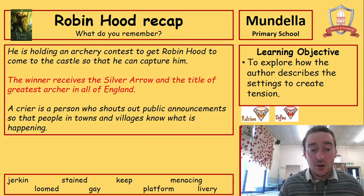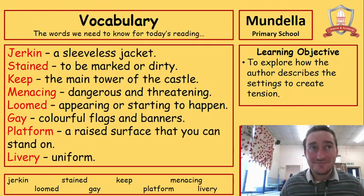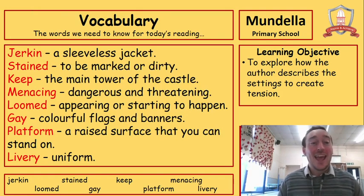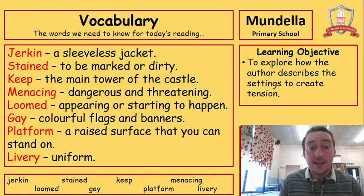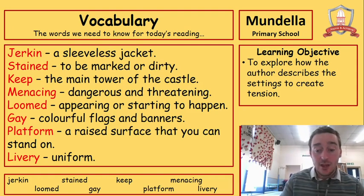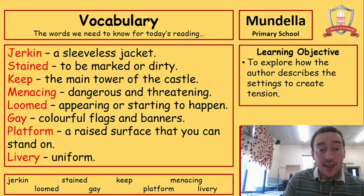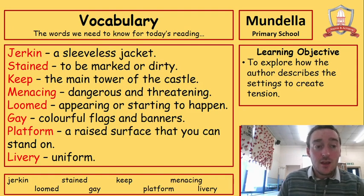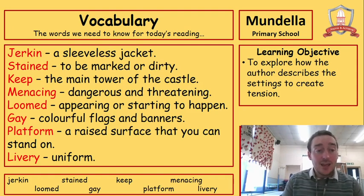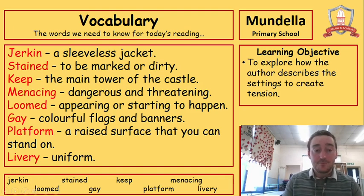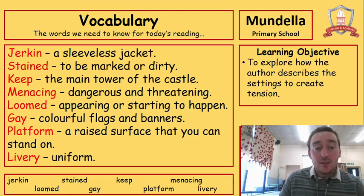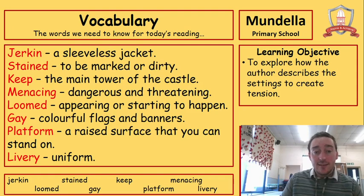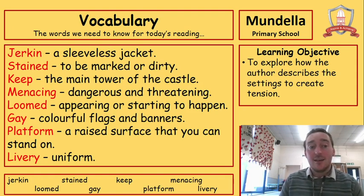Now let's have a look at the vocabulary we're looking at today. The first one is jerkin — a jerkin is a sleeveless jacket. The second is stained — if something is stained, it's marked or dirty. Then we have keep, which this time means the main tower of the castle. Menacing — if something is menacing, it's dangerous and threatening. It has a real bad implication for Robin Hood. Loomed — if something looms, it's starting to appear or starting to happen.